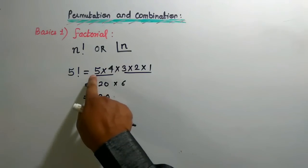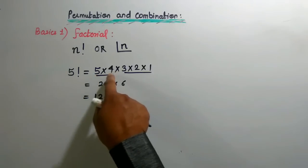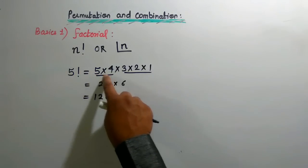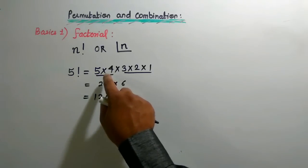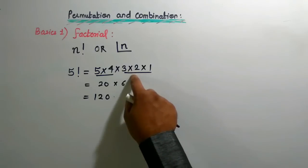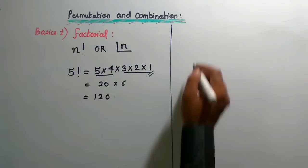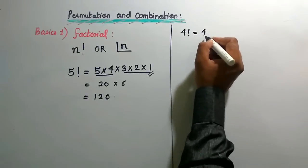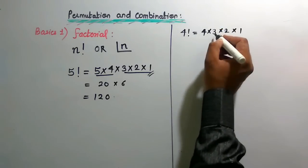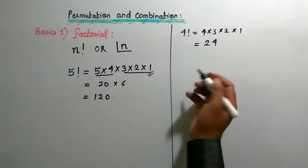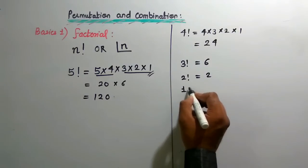So factorial means: 5 factorial is 5 × 4 × 3 × 2 × 1, which equals 120. The pattern is: each term is the previous natural number — 5, then 4 (which is 5−1), then 3 (which is 4−1), then 2, then 1, and here it stops. Similarly, 4 factorial is 4 × 3 × 2 × 1 = 24. Three factorial is 6, two factorial is 2, and one factorial is 1.